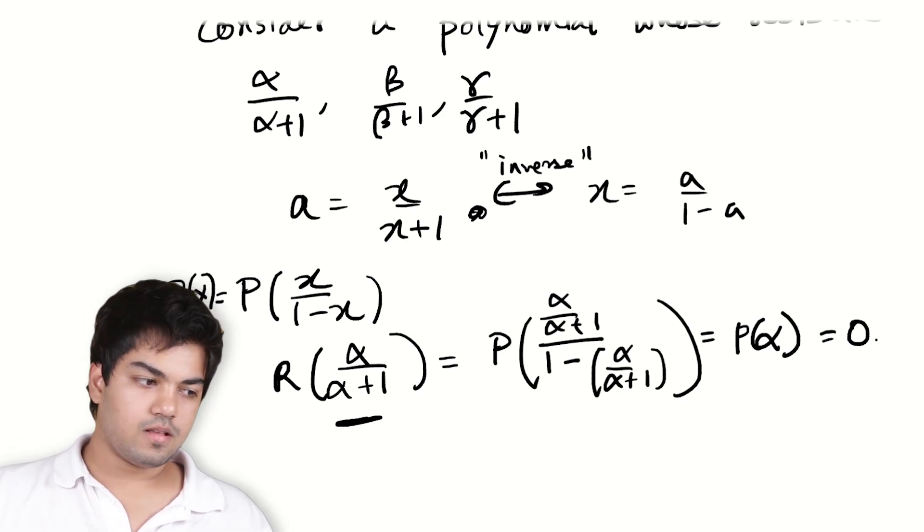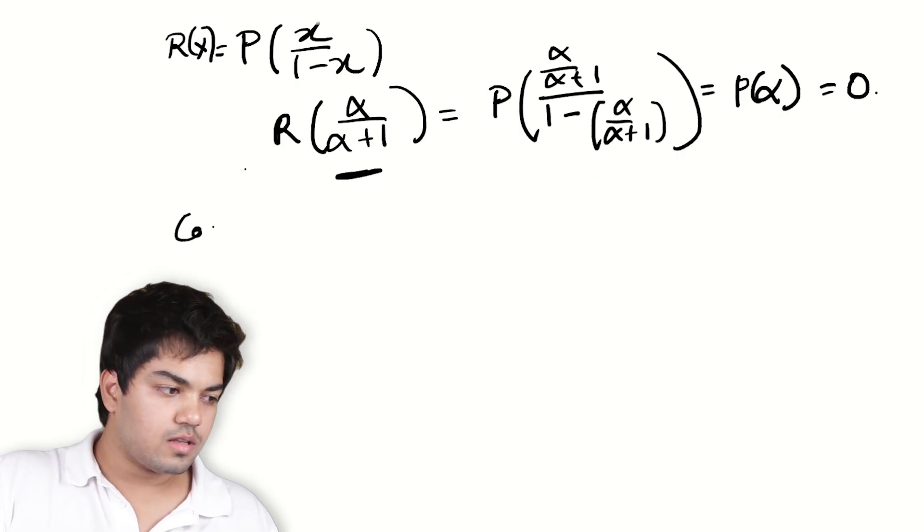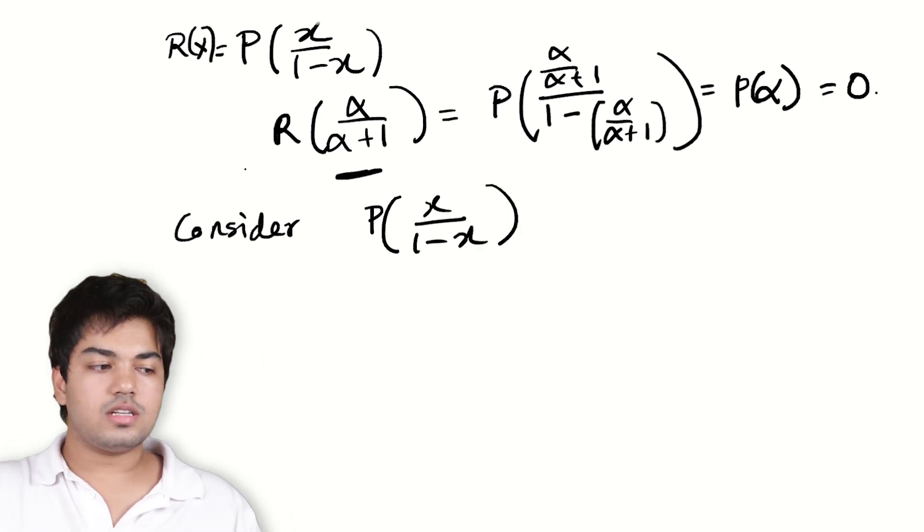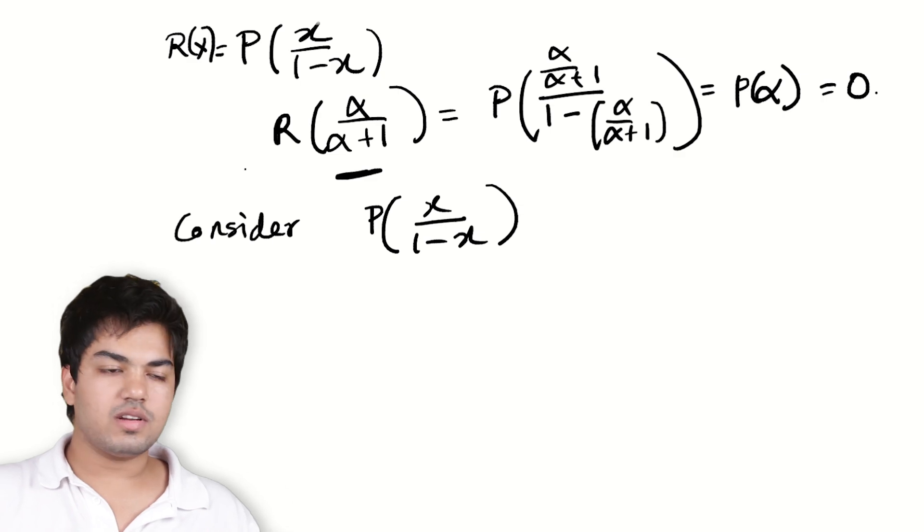So α/(α+1) is a zero of R. Right? So essentially, I want to consider this thing, P(x/(1-x)). Unfortunately, this is not a polynomial. That's okay. We make it one. It's very simple.